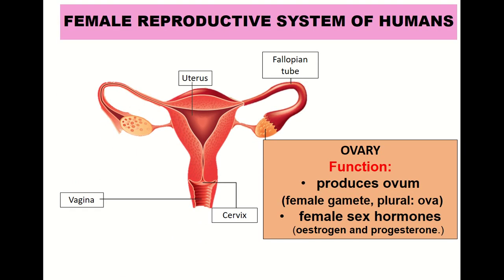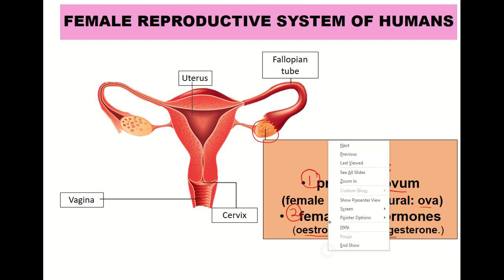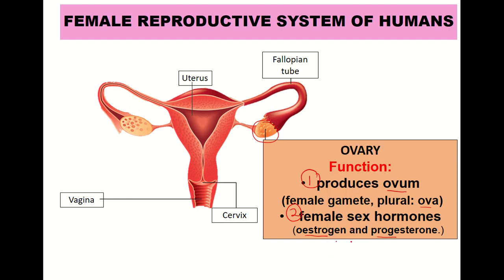The functions of the ovary: number one is to produce the ovum — in the plural form, we call it ova. The second function is to produce female sex hormones, which are estrogen and progesterone. Please remember these types of sex hormones because we will discuss them later in the next subtopic.